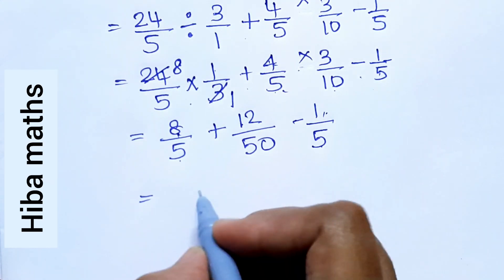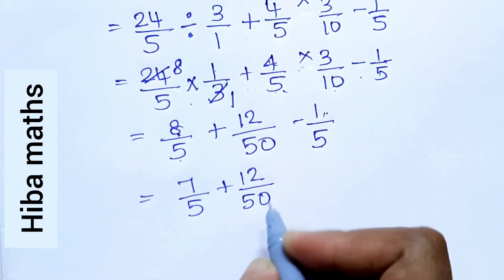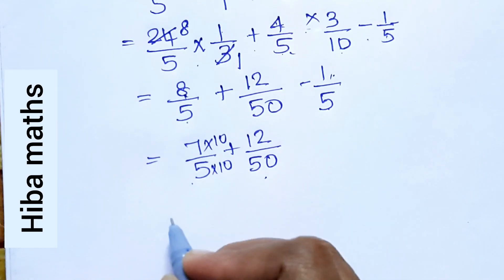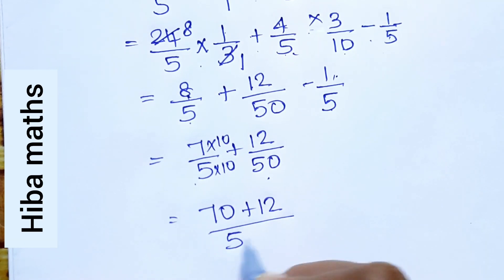So, 8 minus 1 is 7 by 5 plus 12 by 50. 1 by 5 into 50, 5 into 10 is 10. So, this is 70 plus 12 divided by 50.